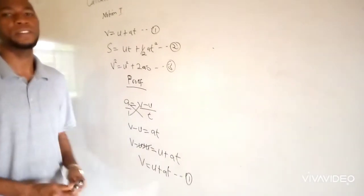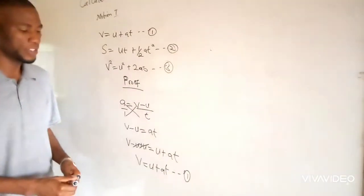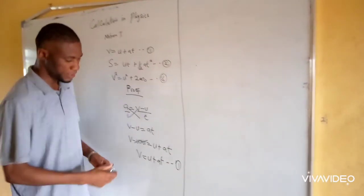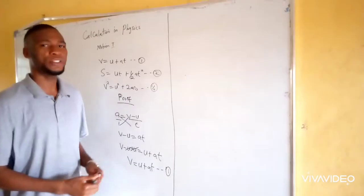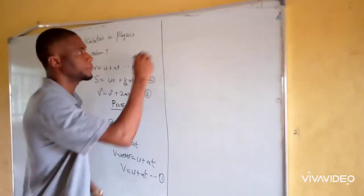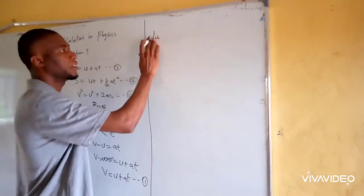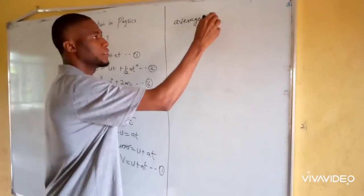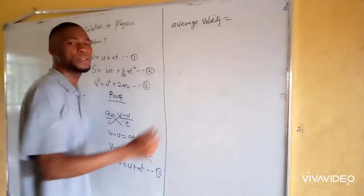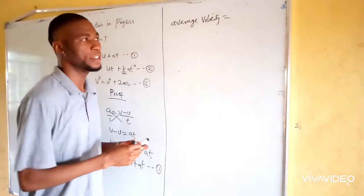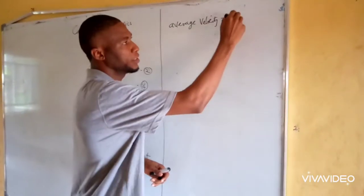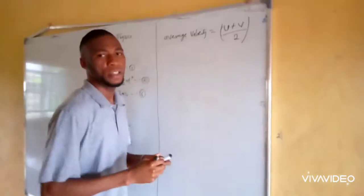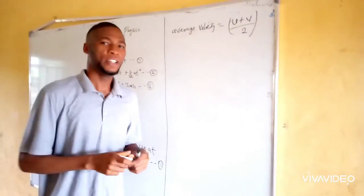Now we are going to move to the second equation. We know that average velocity is equals to u plus v over two.